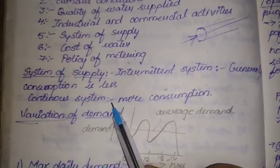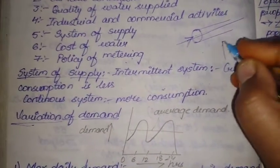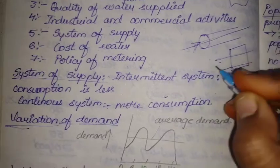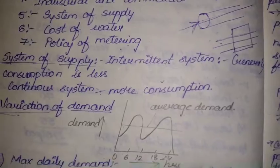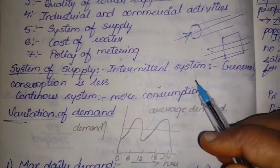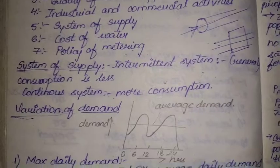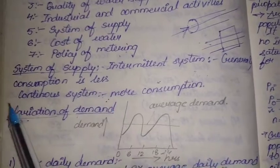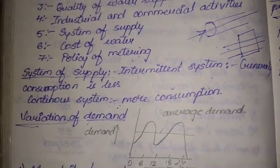System of supply is another important factor. The intermittent system is where water is released once or twice in a period — as seen in some areas where water is provided once in two or three days. The continuous system is where water is provided 24 hours a day, 24/7. With a continuous system people consume more water; with an intermittent system they consume less.